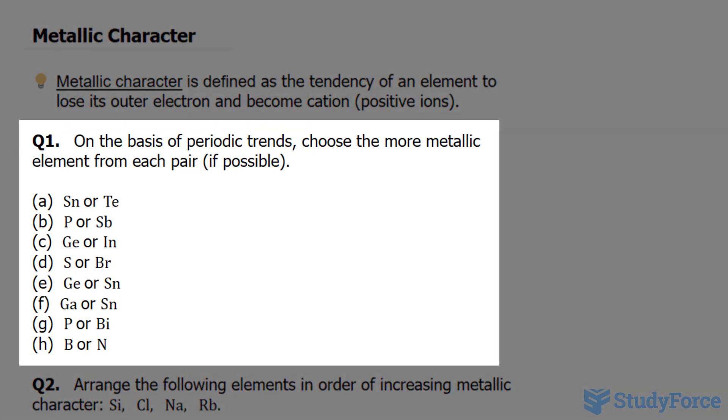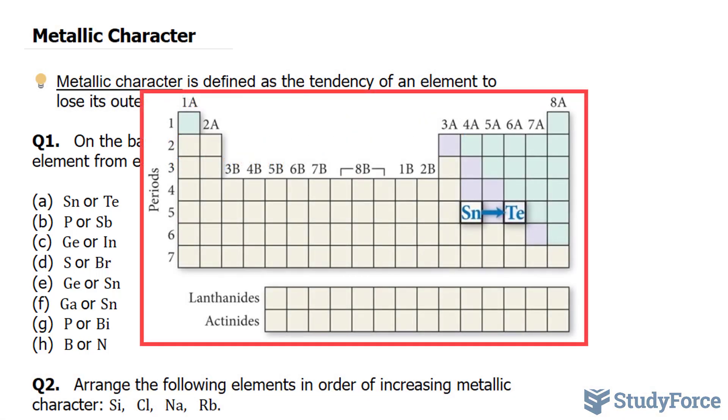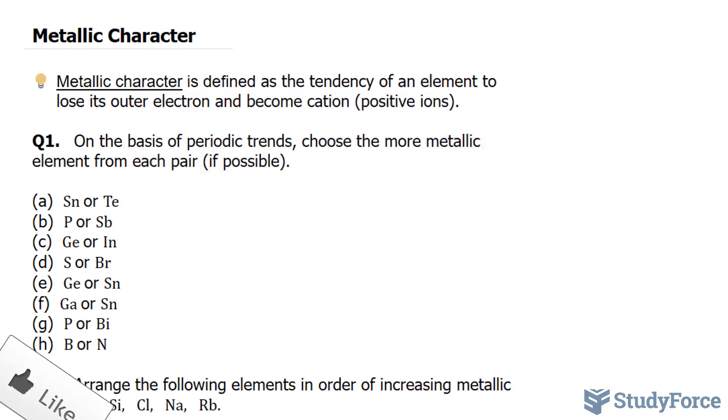With that being said, the question reads: on the basis of periodic trends, choose the more metallic element from each pair if possible. Starting with question A, we'll compare tin and tellurium. Tin is more metallic than tellurium because as you trace the path between them on the periodic table, you move to the right within the same period. Tellurium is to the right of tin, so tin is more metallic of the two. Remember, metallic character decreases as you move to the right.